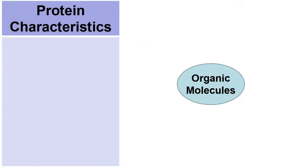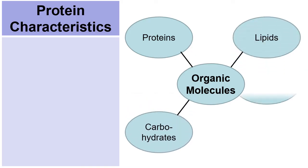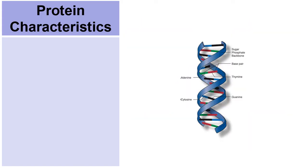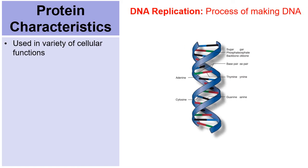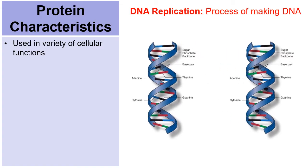So when it comes to proteins, they are one of the four categories of organic molecules, the other being lipids and carbohydrates and nucleic acids. Now, proteins are used in a variety of cellular functions. For example, DNA replication. One piece of DNA can copy itself into two pieces of DNA. This requires proteins along the journey.